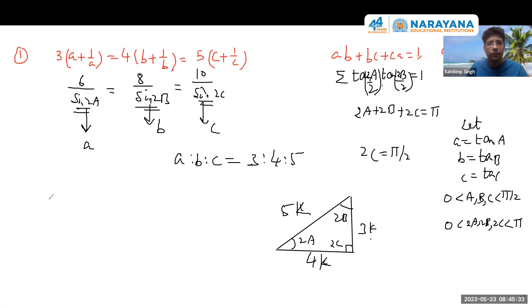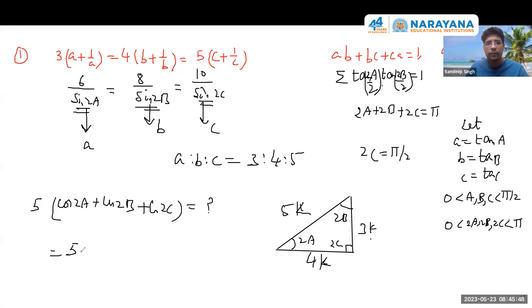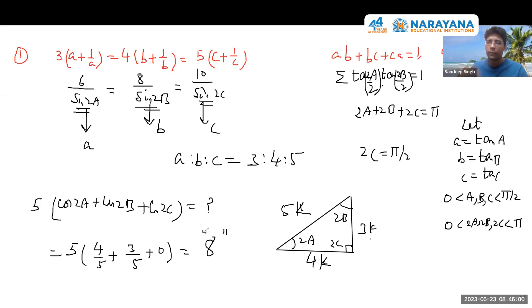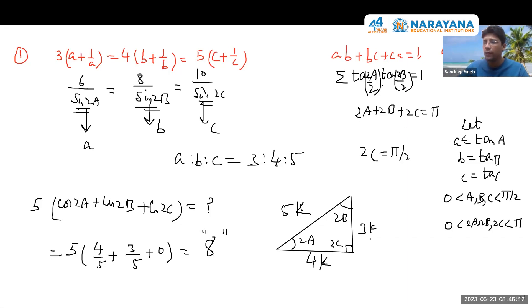We were asked to find the value of 5·(1−a²)·cos(2a) + cos(2b)·(1−a²)/(1+a²). Now you can easily get the value: cos(2A) is 4/5, cos(2B) is 3/5, and cos(2C) is 0 since 2C = π/2. So the answer is 8. It's an integer-type problem. So like that, using tan inverse substitution, we close this problem.